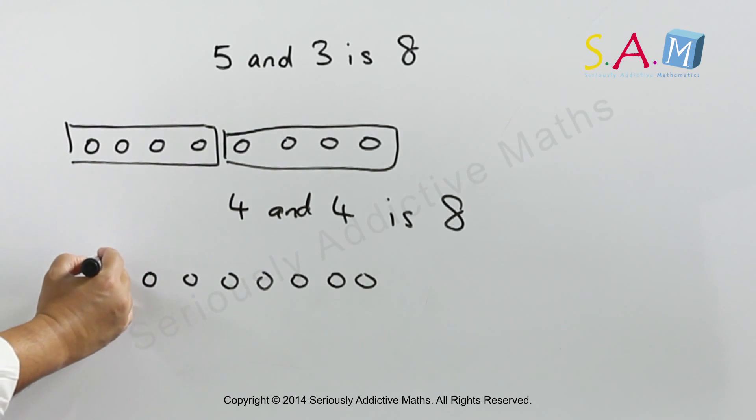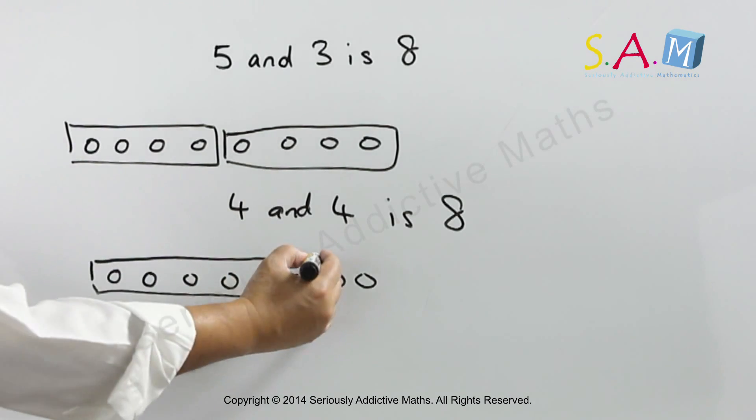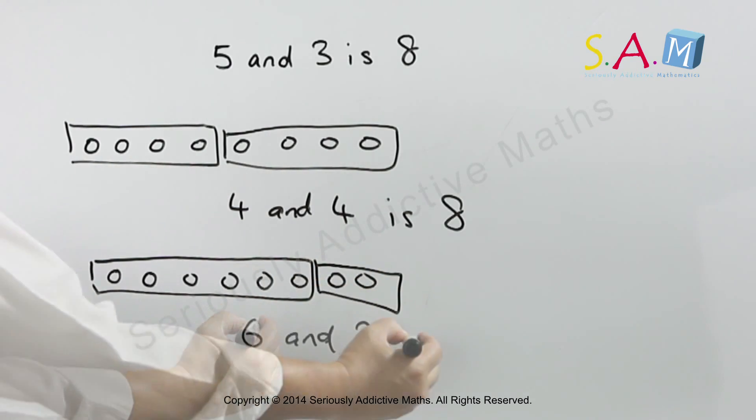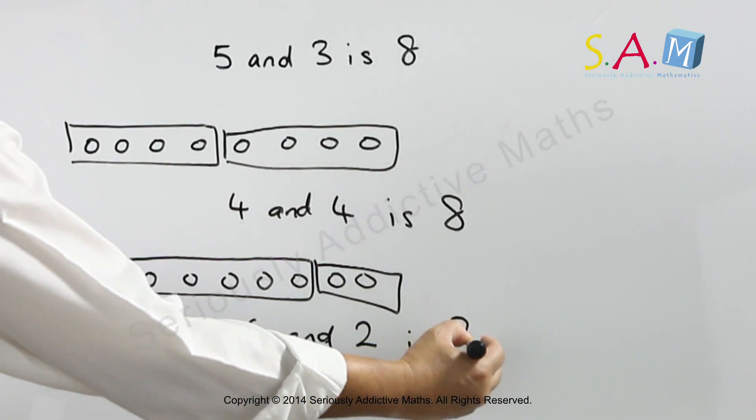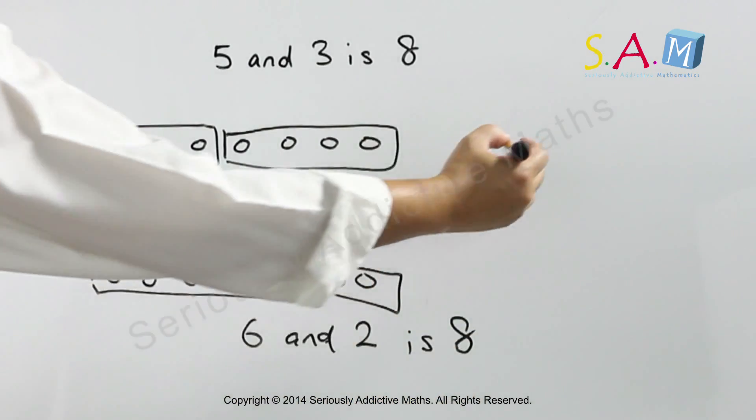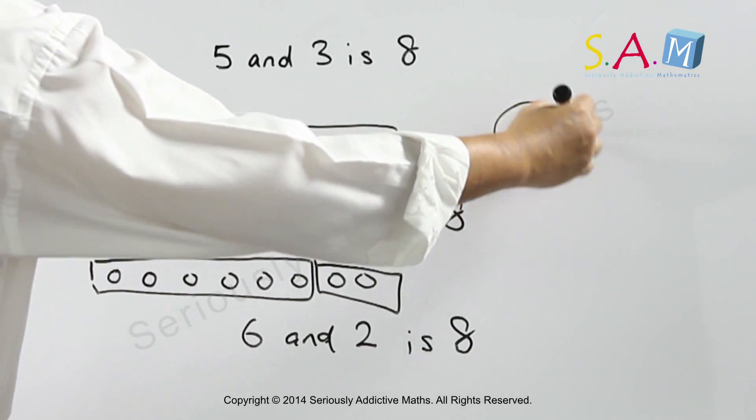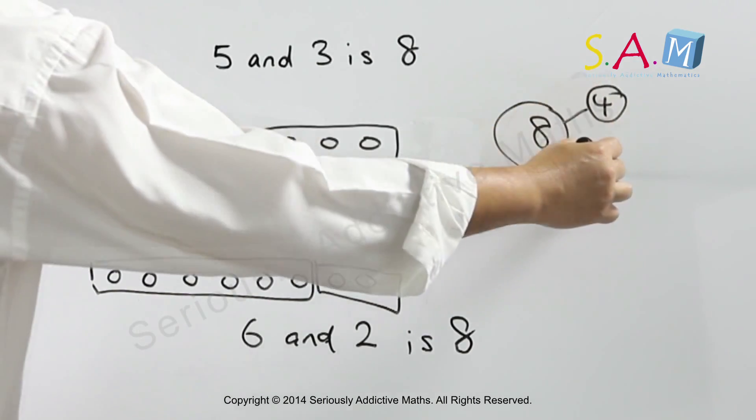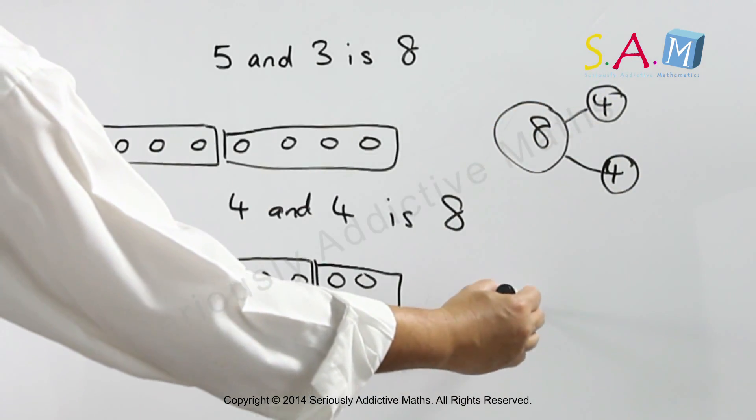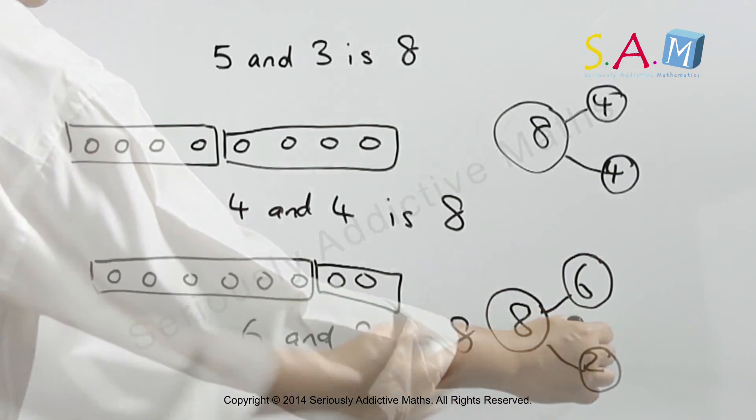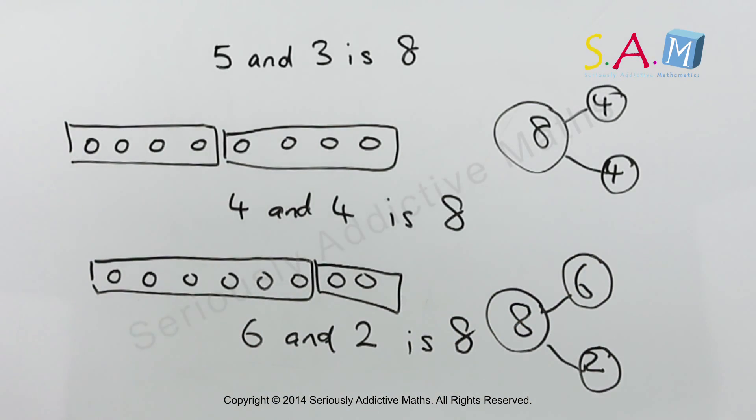We can have, say, 6 and 2 makes 8. So 6 and 2 is also 8. In this case, we can have 8. We can draw it as 4 and 4. We can also have 8, which is 6 and 2. These are some of the examples of number bonds.